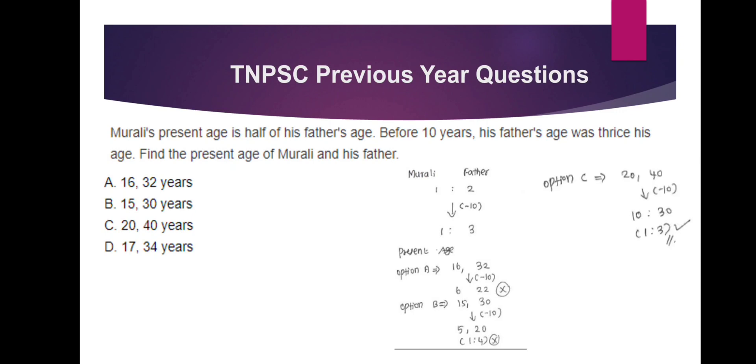Option C is 20 to 40. If you check: 10 years ago it becomes 10 to 30, which is 1 to 3. So option C is the answer.